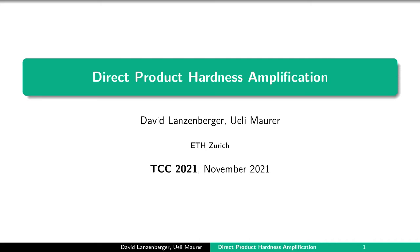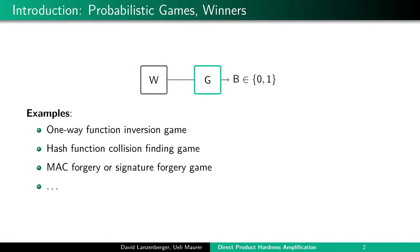Welcome to the presentation of our paper 'Direct Product Hardness Amplification'. We start by introducing the basic objects we are considering. We are interested in probabilistic games that are interactive objects where a winner W, which may also be probabilistic, may interact with this object possibly via multiple rounds exchanging messages. The game has a winning condition denoted by B, which is an additional output bit that is monotone — essentially at some point the game says the game was won or it was lost.